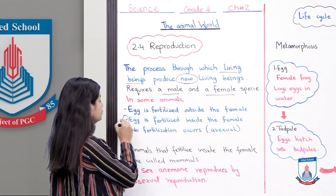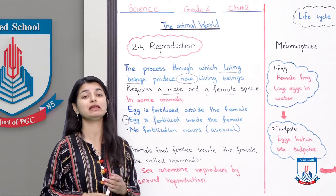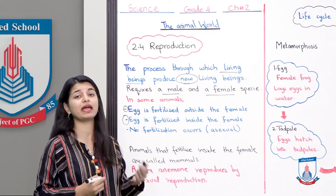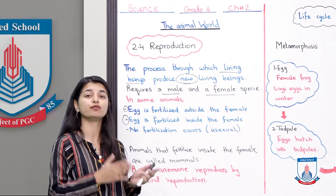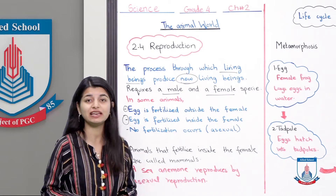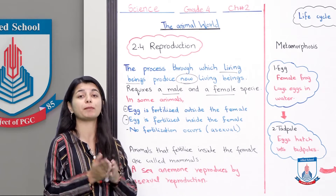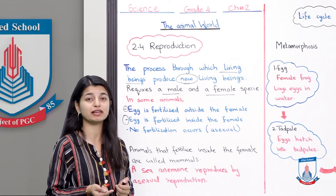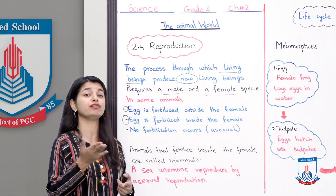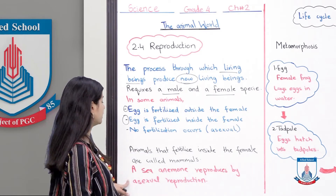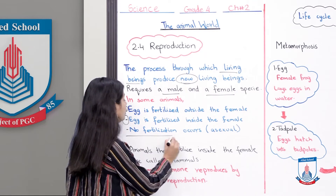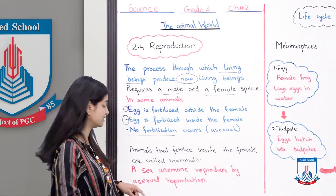In some animals, no fertilization occurs at all. They are asexual, and there is no fertilization in that way, but a new offspring is still born. Animals that fertilize inside the female are called mammals. A third category is asexual reproduction, where no male-female interaction is needed. The sea anemone is an example of an animal that reproduces by asexual reproduction.